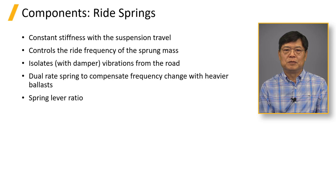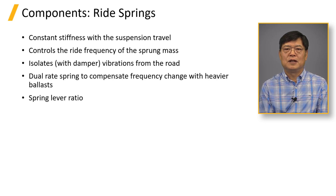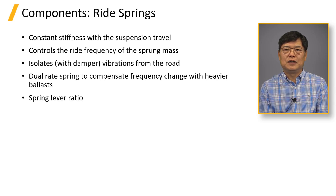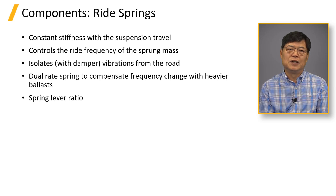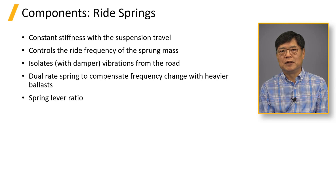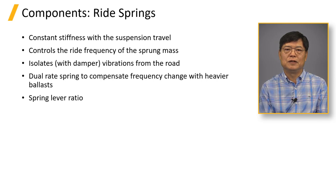Spring lever ratio is 1.0 for strut suspensions and 1.5 for SLA suspension. Effective spring rate at the wheel center is reduced in SLA suspensions. For example, a 50 N/m ride spring in SLA suspension would have an effective stiffness of 22.2 N/m at the wheel center.